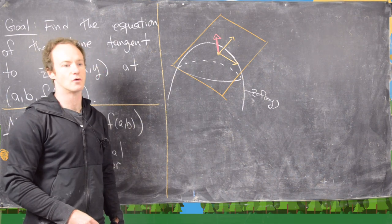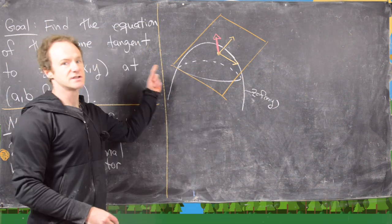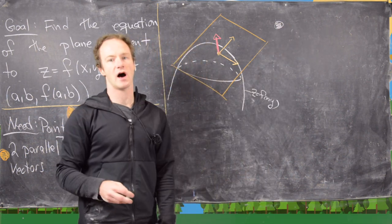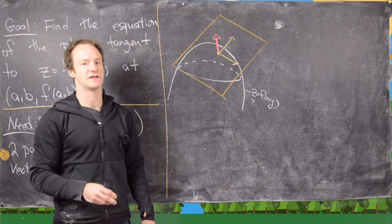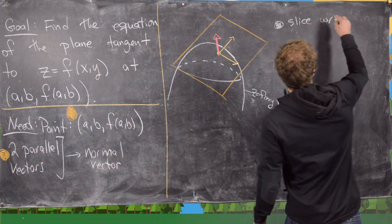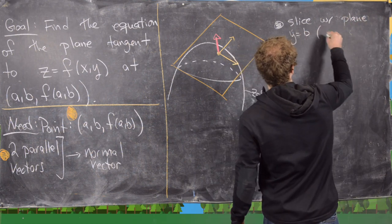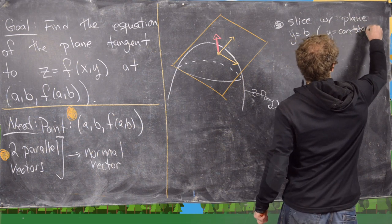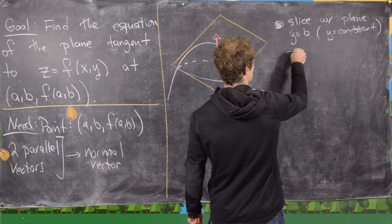They can be crossed together to get the normal vector. The first thing I want to do is take a slice of this surface with a certain plane, which will allow us to find one of the tangent vectors — one of the vectors parallel to the tangent plane. So let's slice this picture with the plane y equals b; in other words, we're setting y equal to a constant, which means x is a variable.